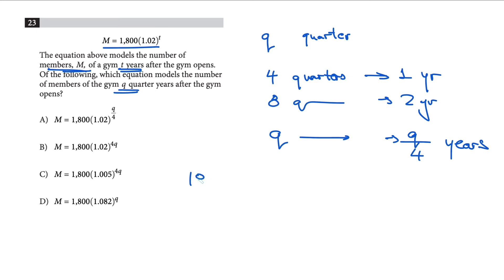You put 1800(1.02)^t where t is q/4. The first choice is 1800(1.02)^(q/4), and that's your correct answer.